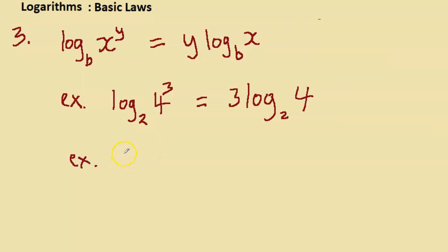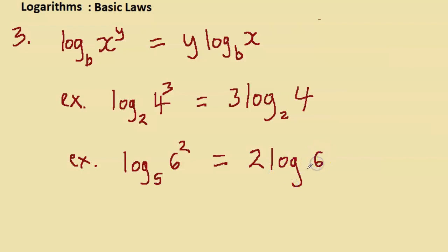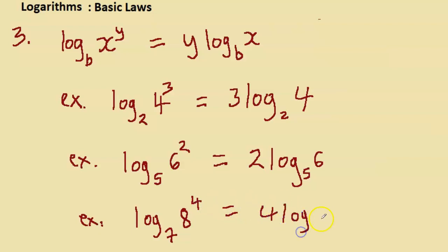Another example: log of 6² base 5 can be written as 2·log 6 base 5. This is the same as log 36 base 5 since 6² = 36. Similarly, log of 8⁷ base 4 equals 7·log 8 base 4. The power always comes to the front.